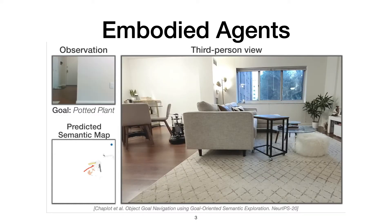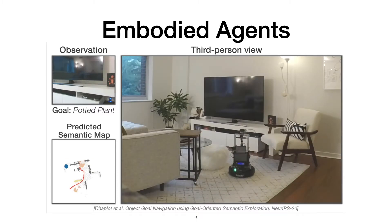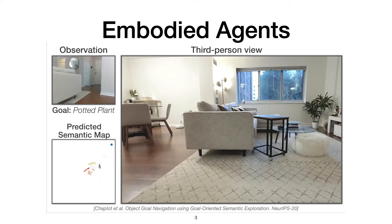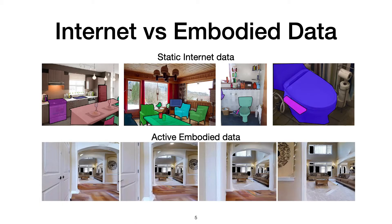Perception is an important part of embodied learning as the agent requires a visual understanding of the environment in order to move and interact with it efficiently. In fact, computer vision started as a field for robotics. This book from 1986 called Robot Vision consists of some of the most common classical computer vision topics. Although computer vision started as a field for robotics, modern computer vision is heavily focused on internet data, which consists of independent photos clicked by humans — very different from embodied data.